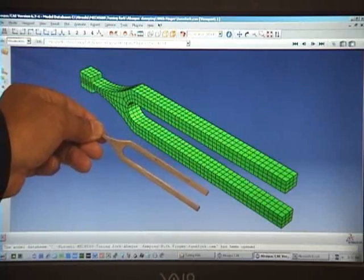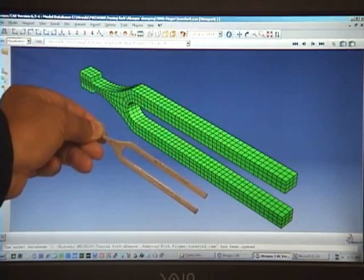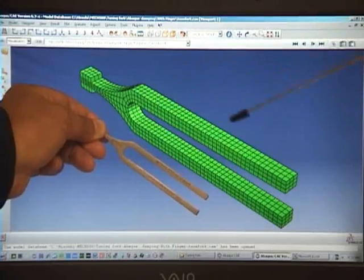Here we have a finite element analysis model of the tuning fork. We're using a software package called Abacus. So here we can see the three-dimensional meshed model of the fork.